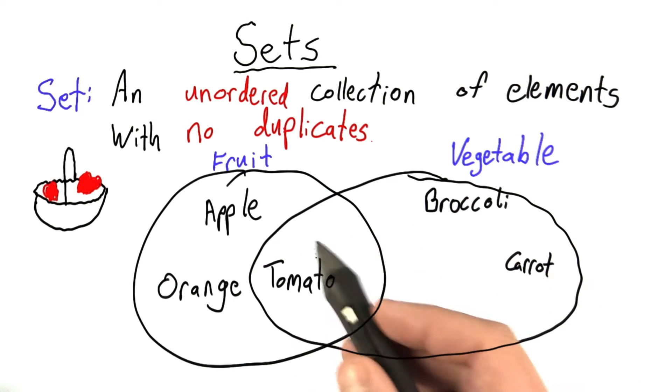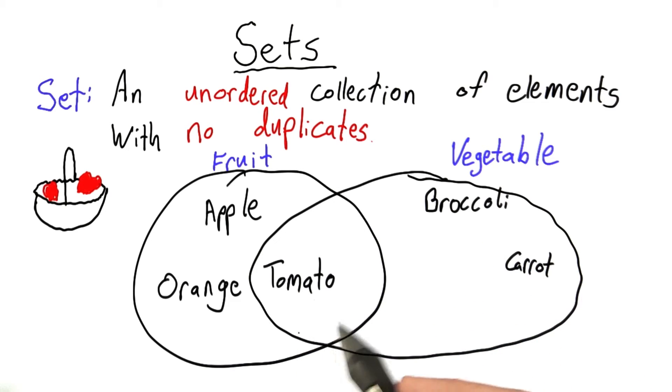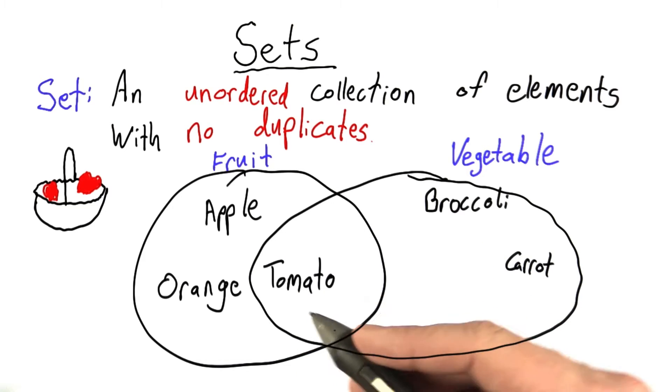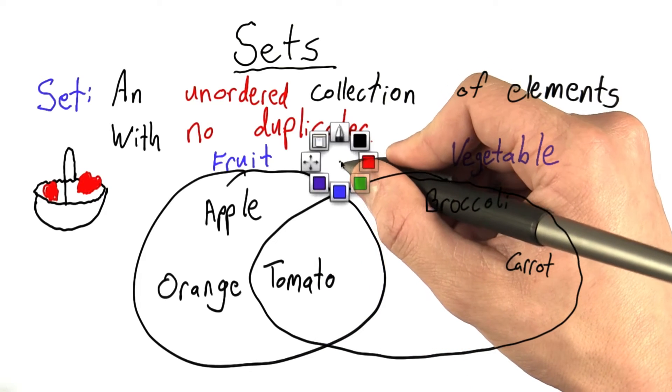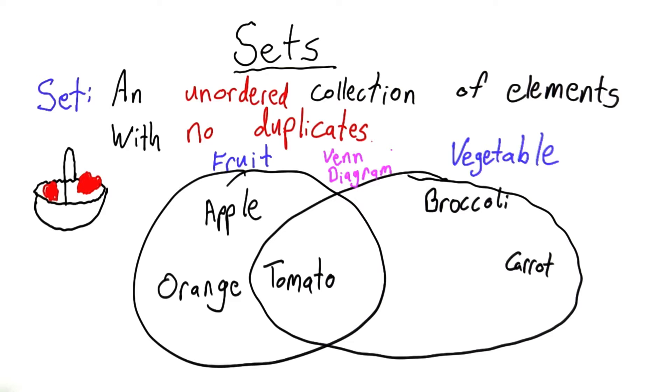And in set theory, this overlap is called the intersection. And I'm going to mention these set theory terms, but you don't have to worry about them too much. This diagram I've drawn here is known in set theory as a Venn diagram, and they can be very useful for visualizing what's going on with sets.